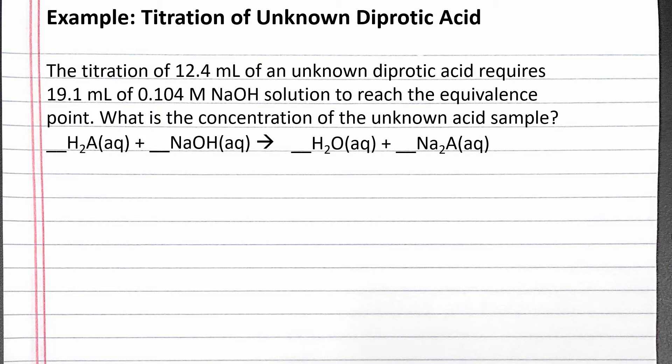The salt will be Na2A. We know sodium has a 1+ charge and the anion A has a 2- charge, so we need 2 sodium for every 1 A anion in the formula unit. Now let's balance. In the acid base reaction, 1 H+ from the acid reacts with 1 hydroxide from the base to produce 1 water. In this reaction, we have 2 H+ ions from the acid because it's diprotic, so we need 2 hydroxide and we will produce 2 water molecules. This reaction should now be balanced.